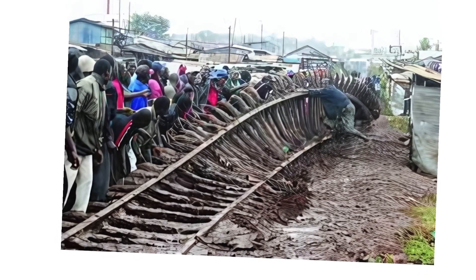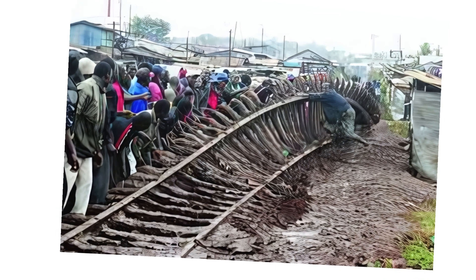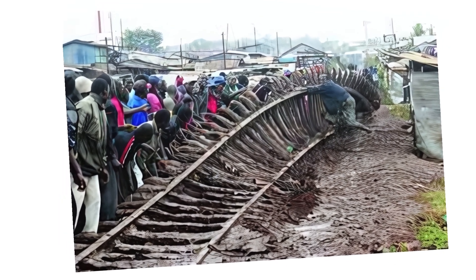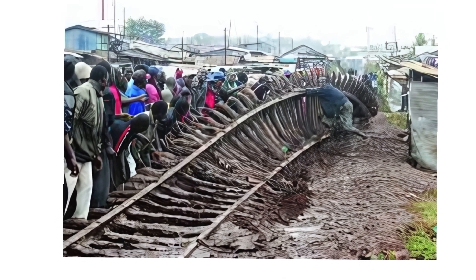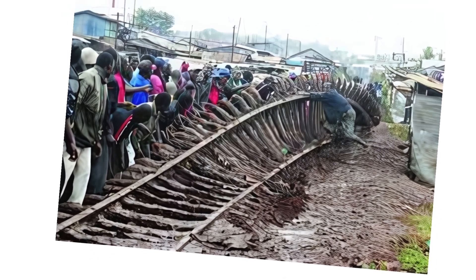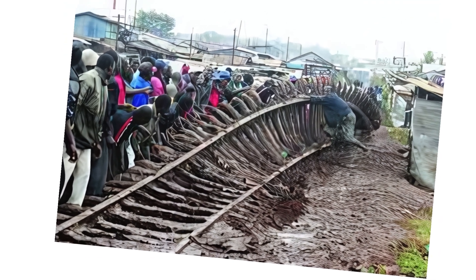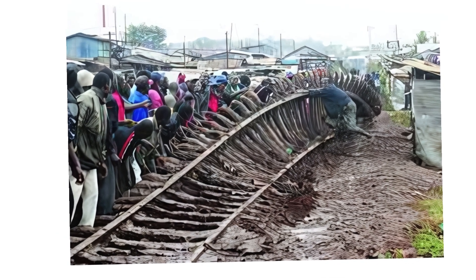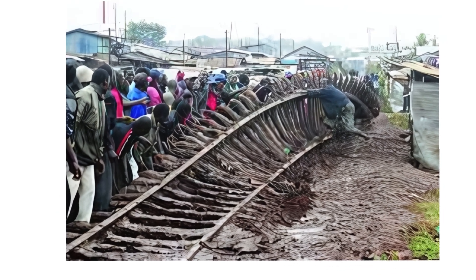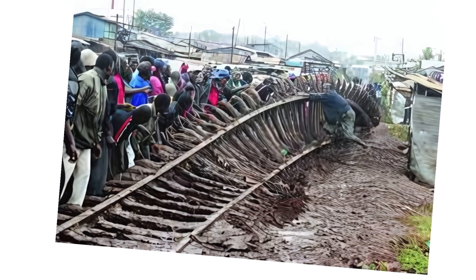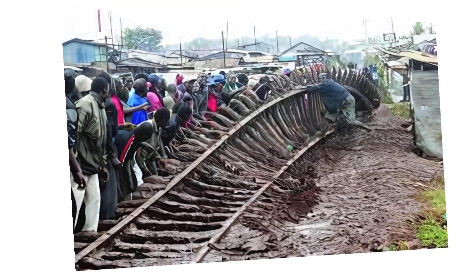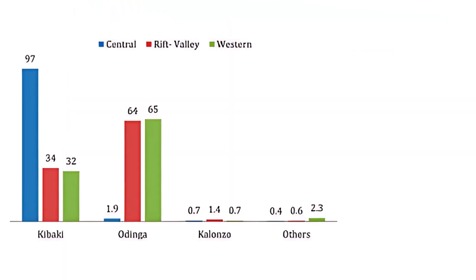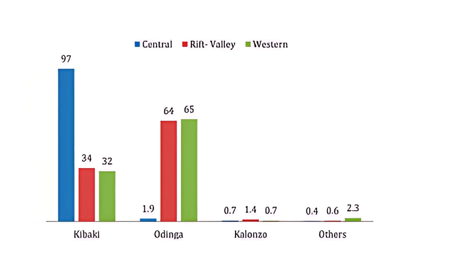1. Systematic electoral fraud: The investigation revealed that systematic electoral fraud, including vote-rigging and ballot-box stuffing, had a decisive impact on the outcome of the Kenyan elections. In 88 of the 210 constituencies, voter turnout in the presidential election exceeded that of the parliamentary poll conducted simultaneously. This discrepancy amounted to a total of 380,944 votes, significantly more than President Kibaki's winning margin of 231,728 votes.